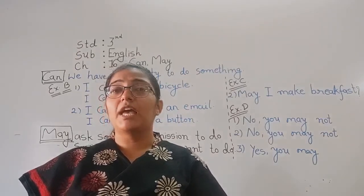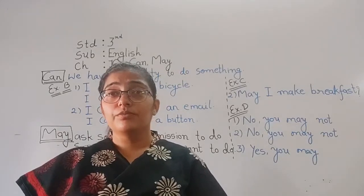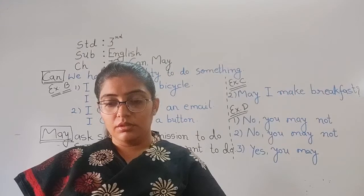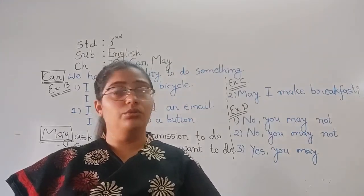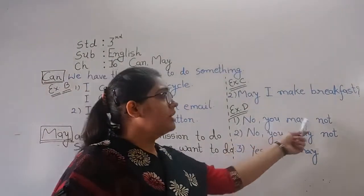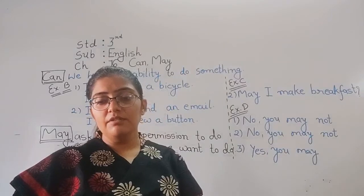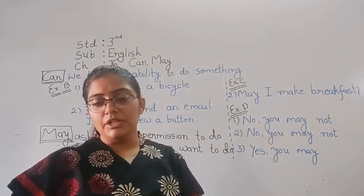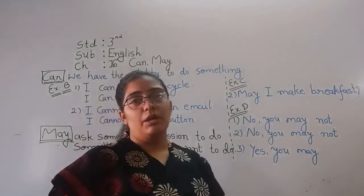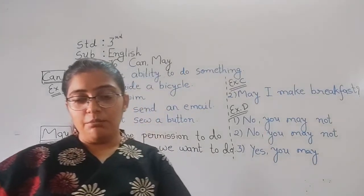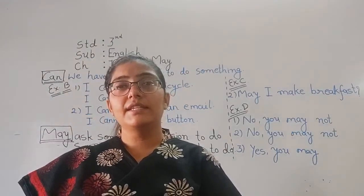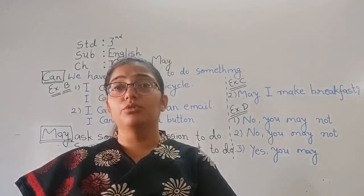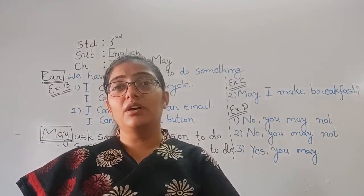Exercise D: Read the questions and write Grama's answer using yes or no. Number 1: 'May I dance on your computer?' — No, you may not. Number 2: 'May I give away your books?' — No, you may not. Number 3: 'May I eat your apple?' — Yes, you may — we should share. Number 4: 'May I sing a song for you?' — Yes, you may. Number 5: 'May I sit at your study table quietly and read a book?' — Yes, you may.